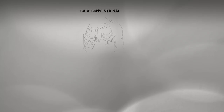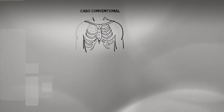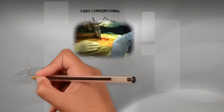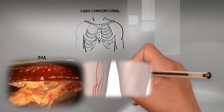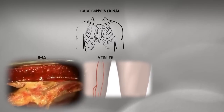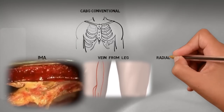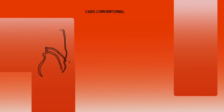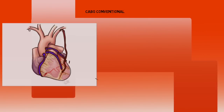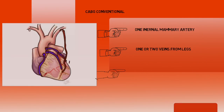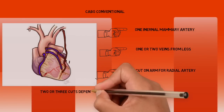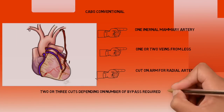During a conventional bypass operation, a midline incision is given on the chest and the sternum is cut in the middle. The internal mammary artery located behind the chest bone is taken to bypass the blocked artery. A vein is taken by a separate cut in the leg, and a radial artery from the left forearm may also be used. So in a conventional bypass procedure, the surgeon uses one internal mammary artery, one or two veins from the leg, and a radial artery from the forearm to complete bypass grafting.